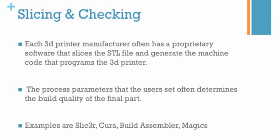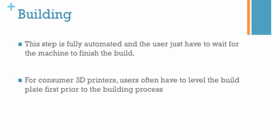Now we're ready for printing. This step is usually fully automated — the user just has to place the part in a desirable orientation and press print. However, for consumer desktop 3D printers, users often have to level the build plate prior to the build process to ensure good adhesion of the print. For professional 3D printers, this leveling is usually done automatically.